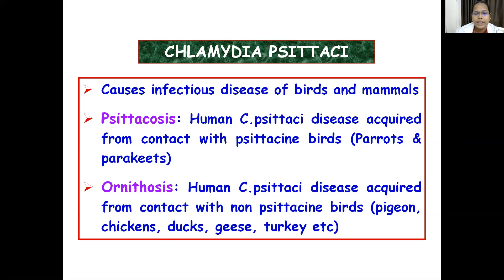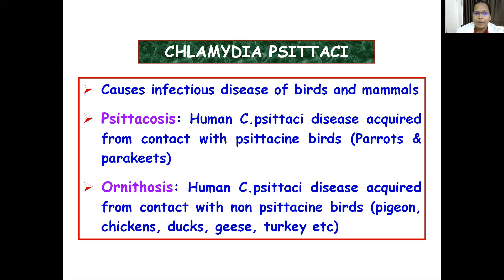Non-psittacine birds like pigeons, chickens, ducks, geese, and turkey are responsible for the disease known as ornithosis. The infection in birds is usually subclinical. To define psittacosis: it is the human Chlamydia psittaci disease acquired from contact with psittacine birds — parrots and parakeets.